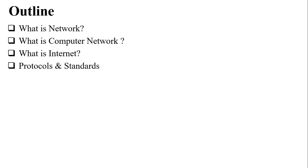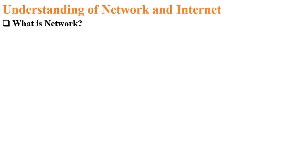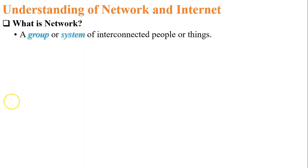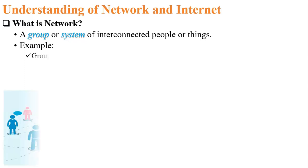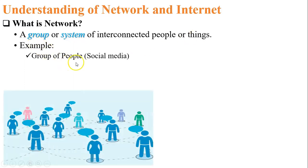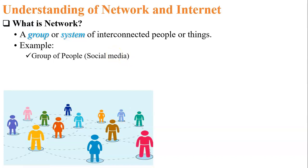Let us start with what is network. The basic definition of network is: a group or system of interconnected people or things. Based on this definition, the first example is a group of people on social media — WhatsApp, Facebook, Twitter — that is called a social network.